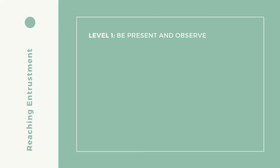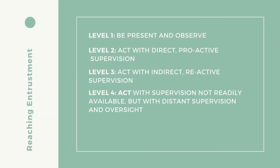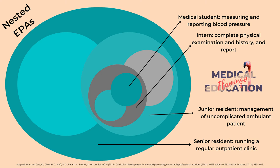Level one: be present and observe. Level two: act with direct proactive supervision, for example with a supervisor physically present in the room. Level three: act with indirect reactive supervision, for example readily available on request. Level four: act with supervision not readily available, but with distance supervision and oversight. Level five: provide supervision to junior trainees.